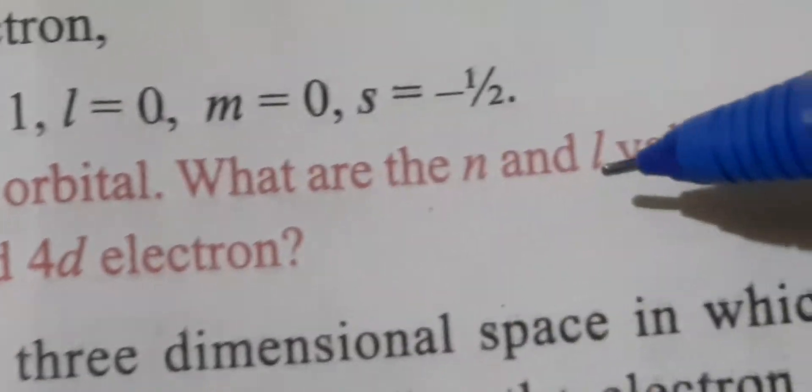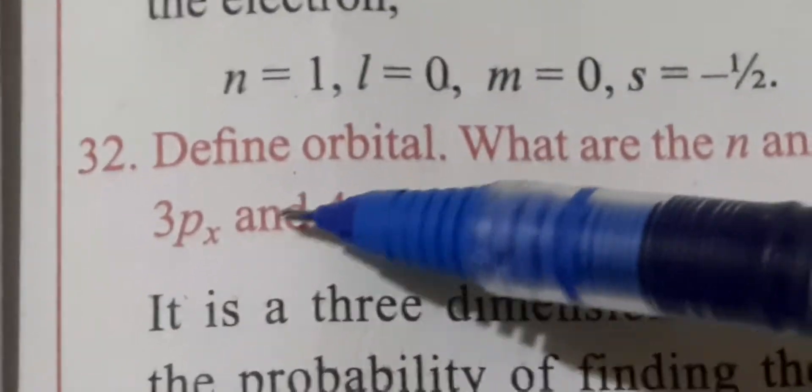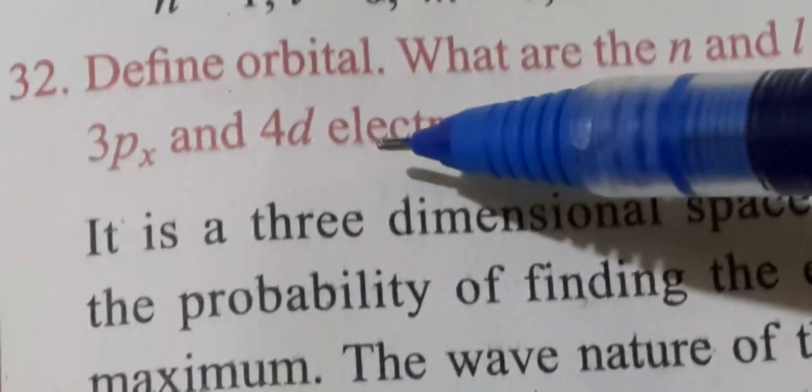Define orbital. What are the n and l values for 3px and 4d electron?